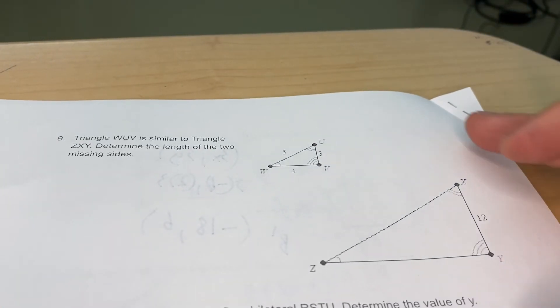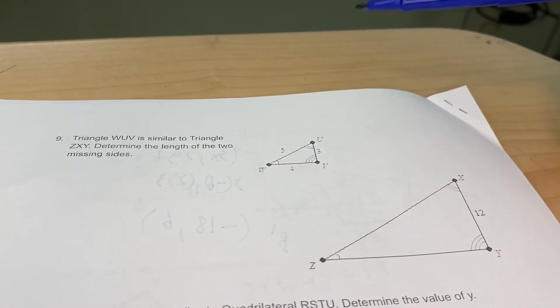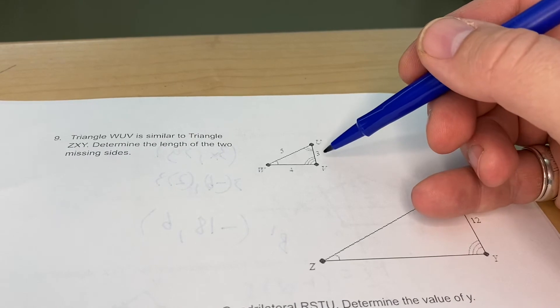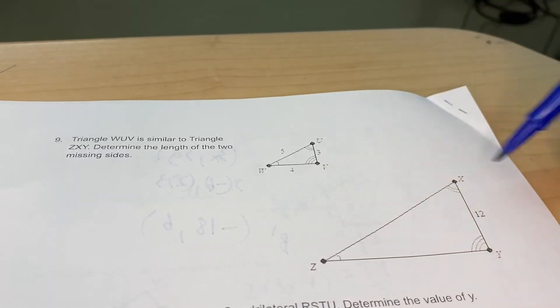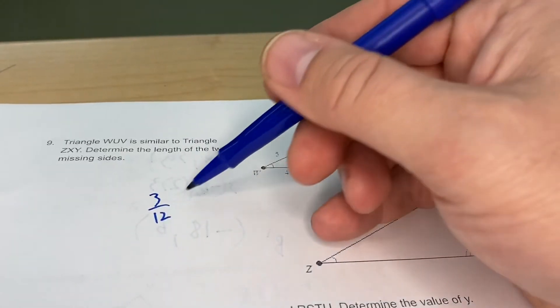Flipping on to the last page here, last few questions, kind of a short review, kind of a short test. Question number nine, triangle WUV is similar to triangle ZXY, determine the length of the two missing sides. So I'm going to set up my ratio. The ones that I have that match up are 3 and 12.